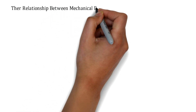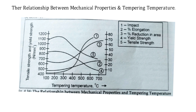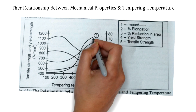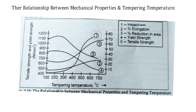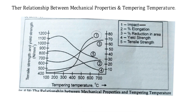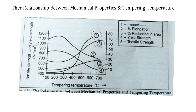The last point is the relationship between mechanical properties and tempering temperature, as shown in this chart. Impact strength increases with increasing temperature. Percentage elongation shows a small increase with increasing temperature. Percentage reduction in area also increases. Yield strength and tensile strength both decrease with increasing temperature. Please have a close look at this chart, as it is very important for understanding how mechanical properties relate to tempering temperature.